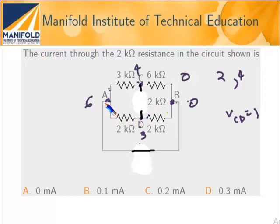So what I can say is that these two form a parallel, so this becomes 1k and this becomes 2k. This becomes 2k because this is 6 into 3 divided by 6 plus 3, so 18 divided by 9 is 2.